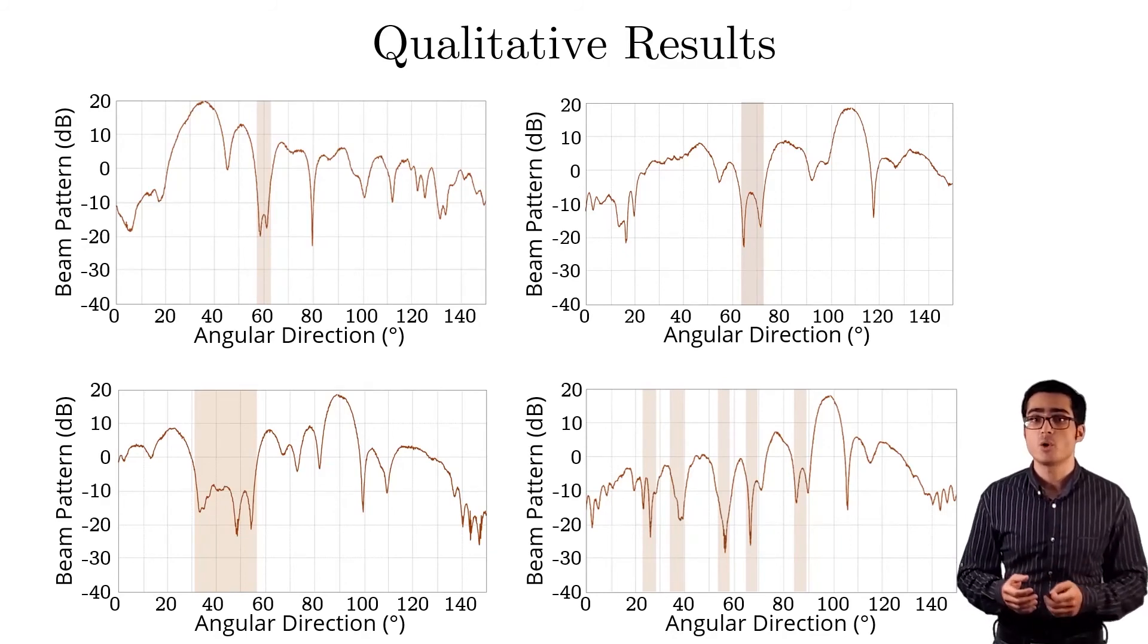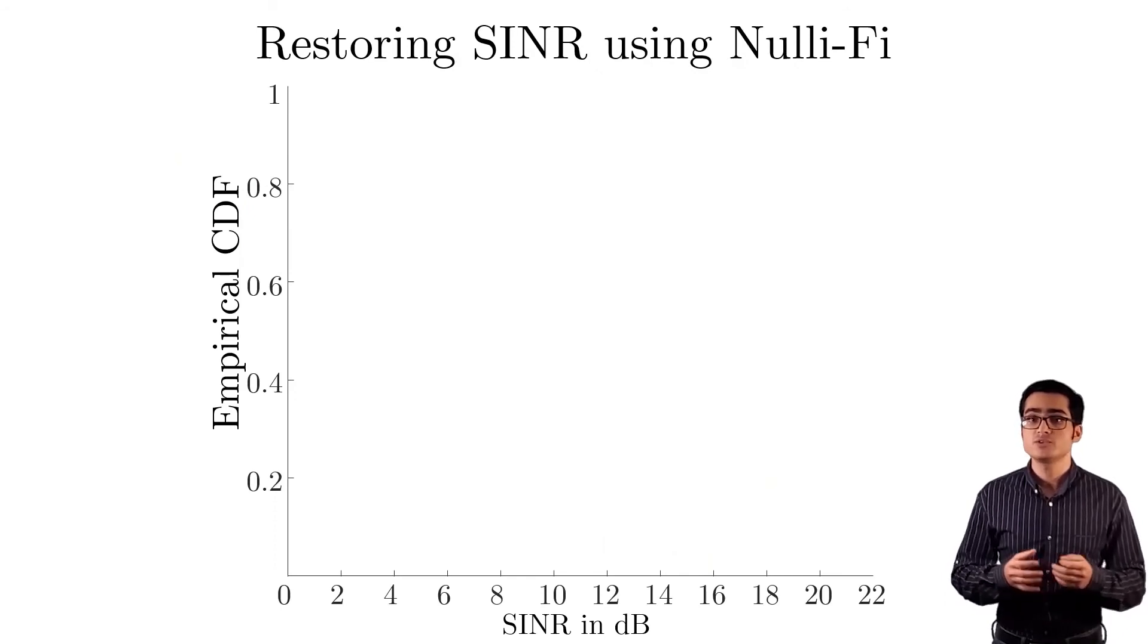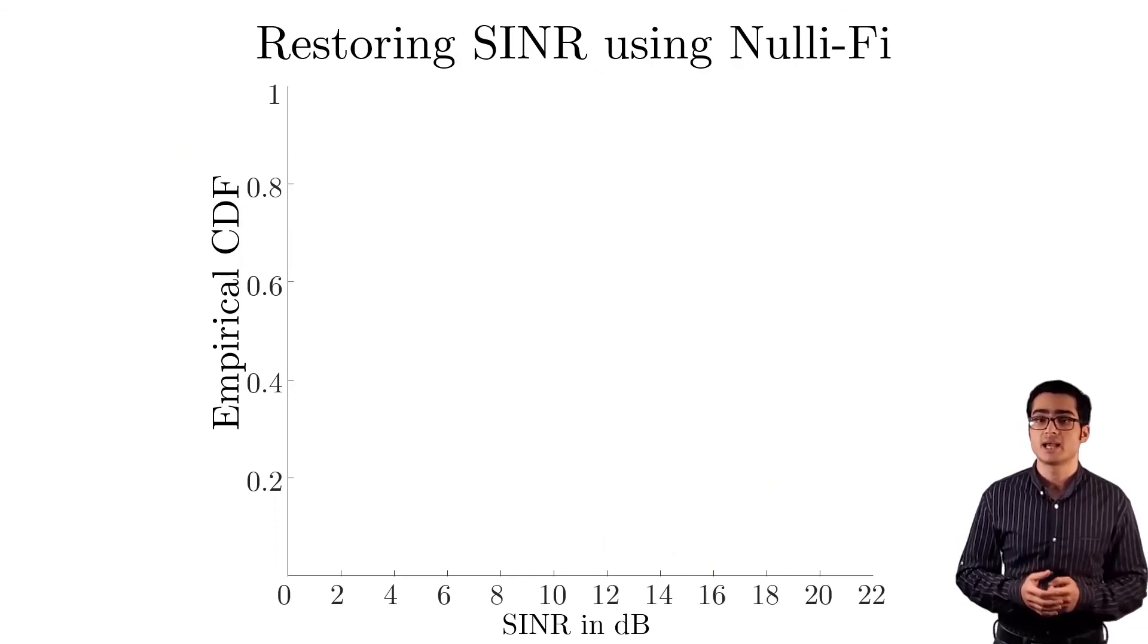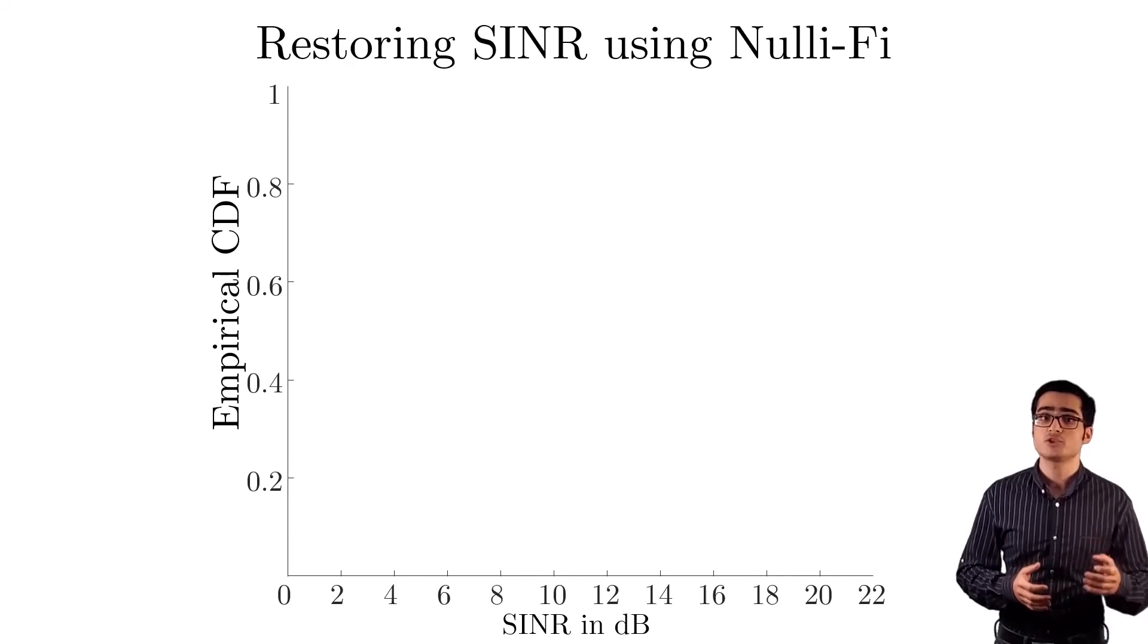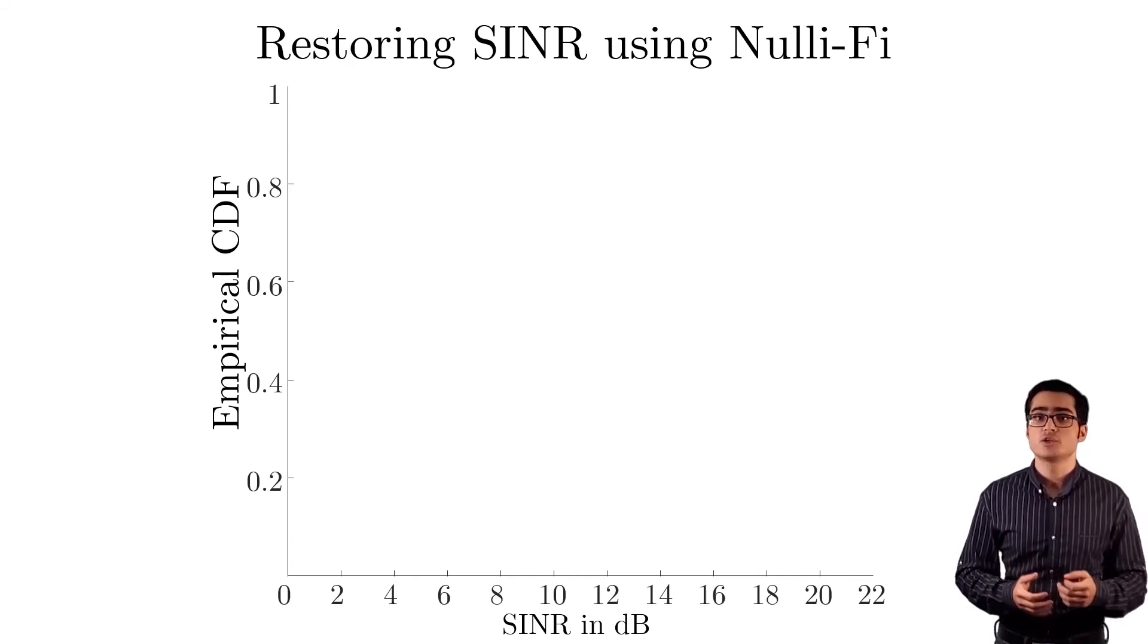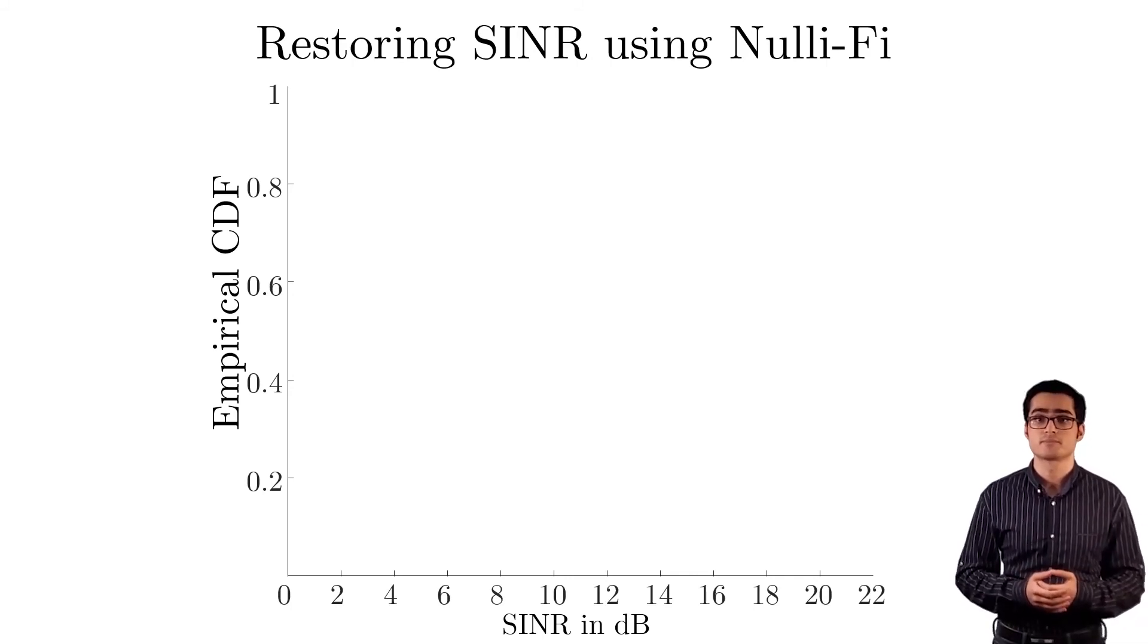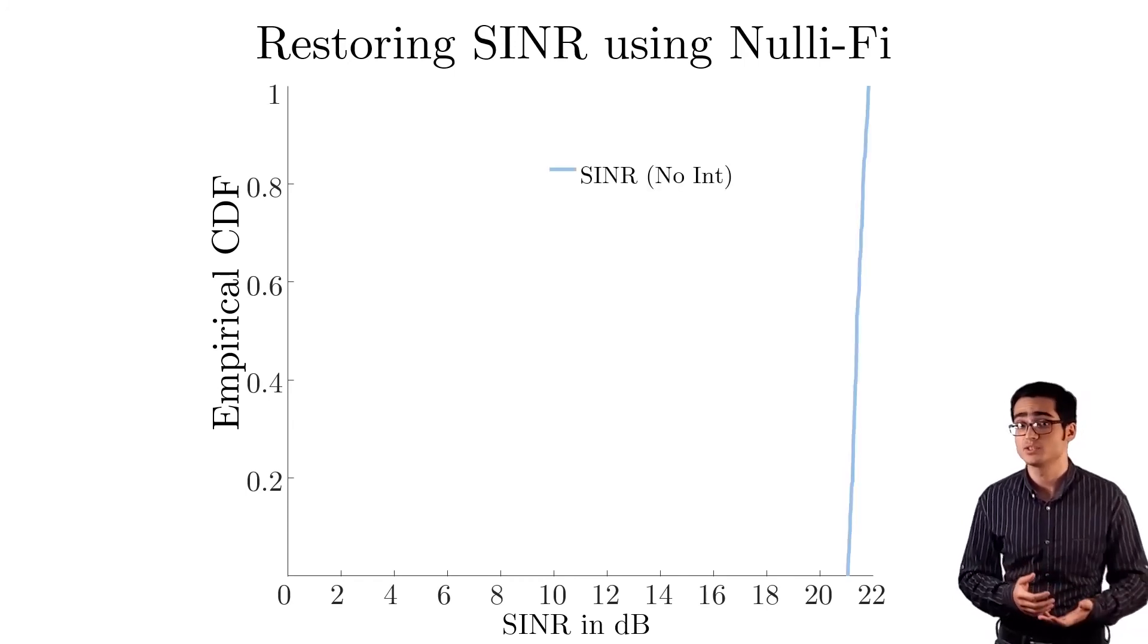Next, we show how Nullify can eliminate interference. We use the signal to interference plus noise ratio, or SINR, as our metric, which we measure with and without Nullify. The figure shows a CDF of the SINR of close to 700 experiments. In these experiments, we started with a link where the SINR was kept around 20 dBs.